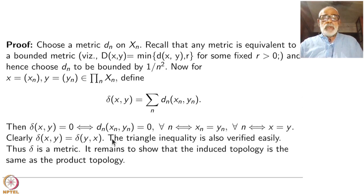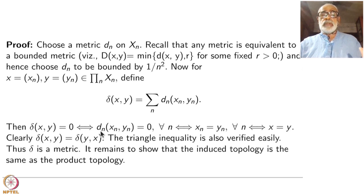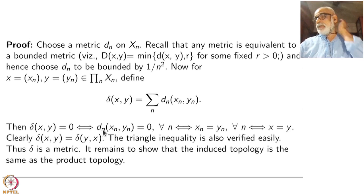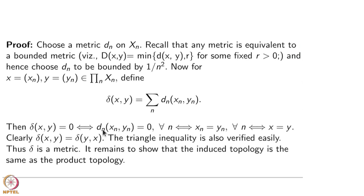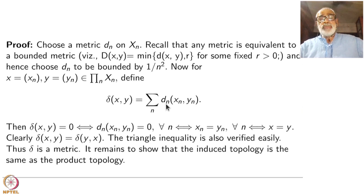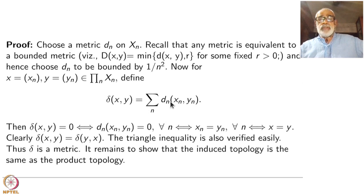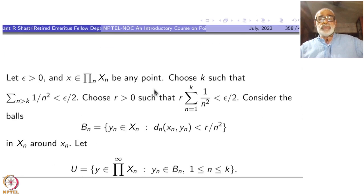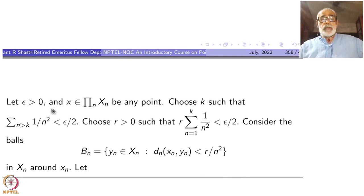What remains is to show why this metric gives the topology we have chosen, namely the product topology. Giving a metric is not at all difficult — there are so many metrics, you can even take a discrete metric. The topology should be the same; that is the key point. When the family is finite, we know that the sum of metrics is a metric — that is the way we have become confident enough to proceed here.